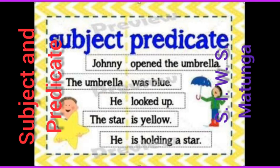The star is yellow. What is yellow? The star is yellow. So, the star is the subject. He is holding a star here. He is the subject; he is holding the star is the predicate. Okay. See you.